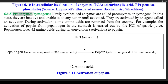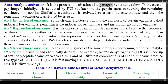6.3.5 Proenzymes/Zymogens — newly synthesized enzymes are called proenzymes or zymogens. In this state, they are inactive and unable to do any action until activated by an agent called an activator. During activation, some amino acids are removed from the enzyme. For example, the activation of pepsin from pepsinogen in the stomach is carried out by the HCl of gastric juice. Pepsinogen loses 42 amino acids during its conversion to pepsin. Figure 6.11 shows the activation of pepsin. Autocatalytic activation is the process of activation of a zymogen by its own active form. Initially pepsinogen is activated by HCl, but later pepsin starts converting the remaining pepsinogen to pepsin. Similarly, trypsinogen is activated to trypsin by enterokinase, and then the remaining trypsinogen is activated by trypsin.